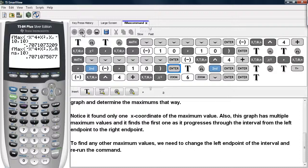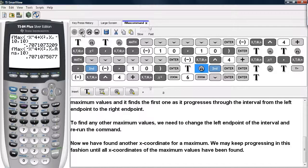And in this case, I get a value of approximately .707. So we have found another x-coordinate for a maximum. We may keep progressing in this fashion until all x-coordinates of the maximum values have been found.